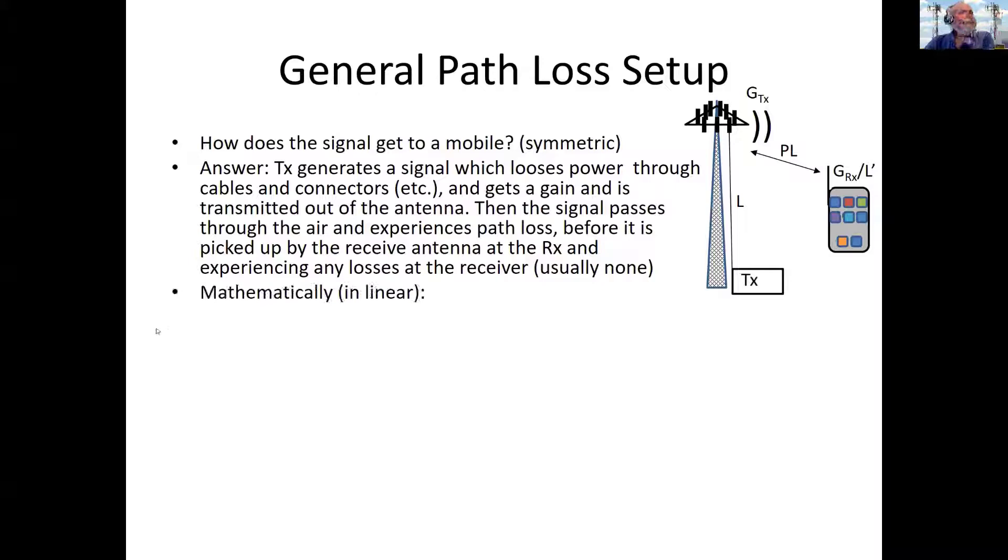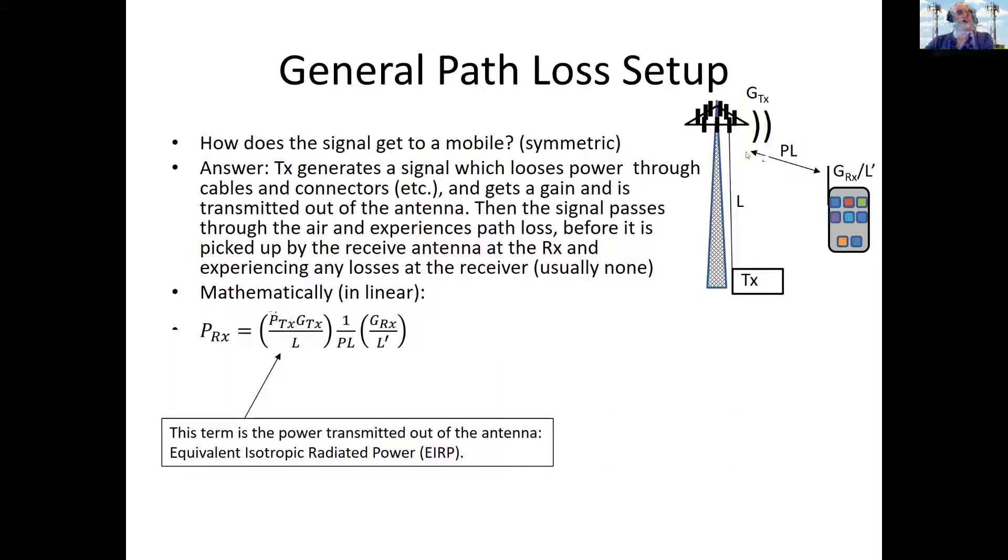So, we can do this in formal mathematics and write it down. And what do you have? Well, you get the power out of your transmitter. That's PTX here. And then you lose something going up the tower. That's dividing by the losses here. And then you multiply by the gain of the antenna here. And then this component here represents what is transmitted out of the tower here. We call that the equivalent isotropic radiated power. It's radiated power. Isotropic because it might as well be isotropic from the phone's point of view.